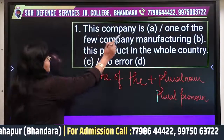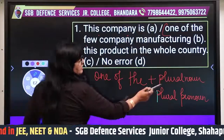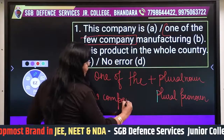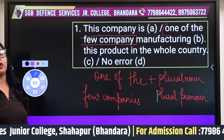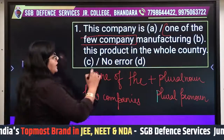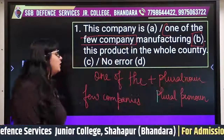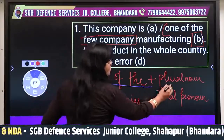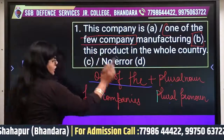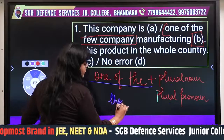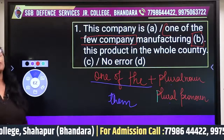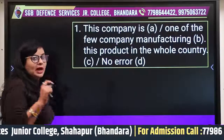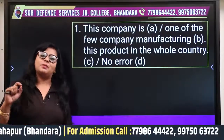See: 'This company is one of the...' — after 'one of the,' what is needed? Plural noun. So it should be 'few companies,' not 'few company.' The wrong part is B — it should be 'one of the few companies.' Whenever 'one of the' is used, the next word must be a plural noun or plural pronoun. If it were a pronoun, it would be 'them.' For example: 'This company is one of them.'